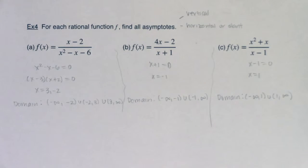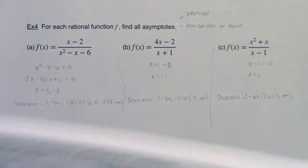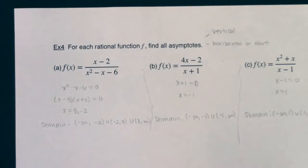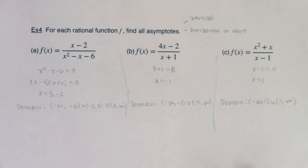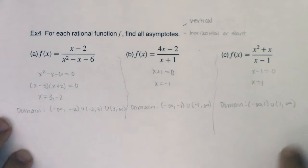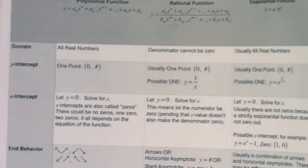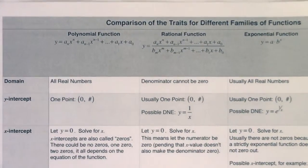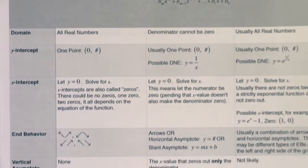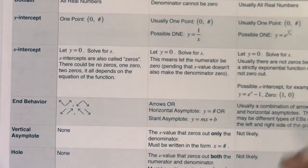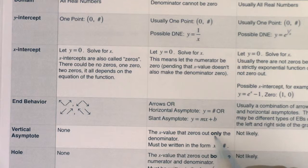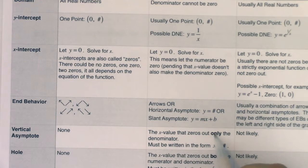If we remember from that giant trait table, let's talk about vertical asymptotes again. When you're talking about vertical asymptotes on a rational function, you want to look for x values that zero out only your denominator. If we find those, we're going to write our vertical asymptote in the form x equals a number.